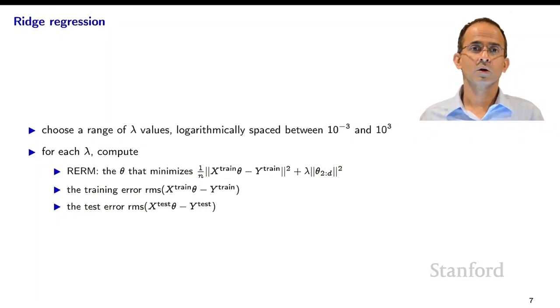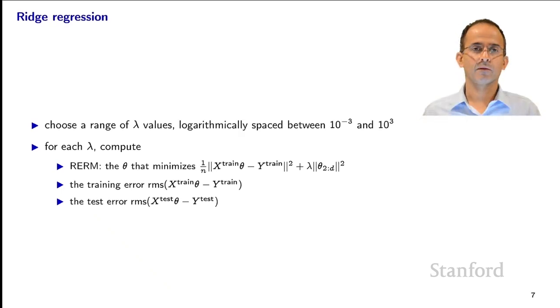So now we're going to do ridge regression. So we're going to use the RMS log price as our performance metric. And so our loss will be the quadratic loss. We'll be minimizing the empirical mean square error in the log price. And for regularization, we'll use ridge regression, so we will use the quadratic regularizer. So remember how we do regularized empirical risk minimization. We choose a range of lambda values logarithmically spaced. Here we choose them between 10 to the minus 3 and 10 to the 3. And for each one of those lambdas, we solve the regularized empirical risk minimization problem to find a Theta.